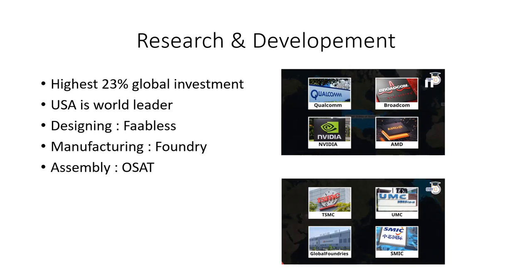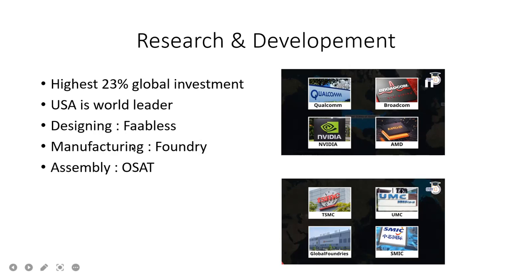Designing is done by fabless companies. Companies like Intel and Samsung are integrated, while Qualcomm, Broadcom, Nvidia, and AMD are leaders in designing and selling chips — all USA-based companies. Manufacturing is done at foundries, which are the most expensive part of the whole process. There are mainly four foundries worldwide: TSMC, UMC, GlobalFoundries, and SMIC. SMIC is based in China, GlobalFoundries in the USA, UMC also in China, and TSMC is based in Taiwan.